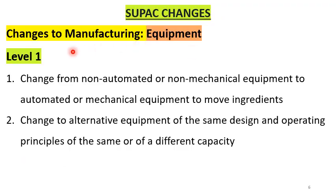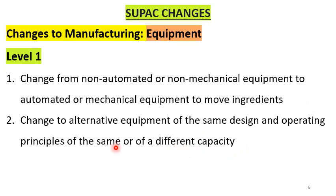Level 1 equipment changes include: change from non-automated or non-mechanical equipment to automated or mechanical equipment to move ingredients. For example, if a company upgraded from a non-mechanical to an automated instrument, this is a level 1 change because there is no major impact on the product. Also included is change to alternative equipment of the same design and operating principle, of the same or different capacity.